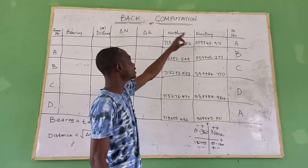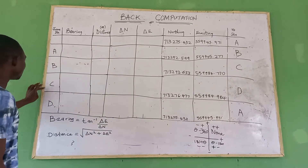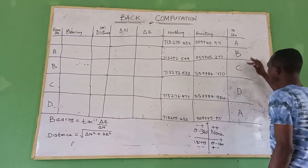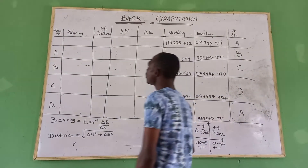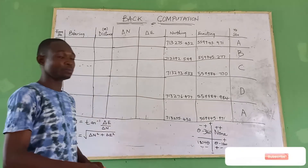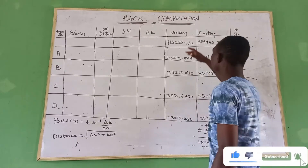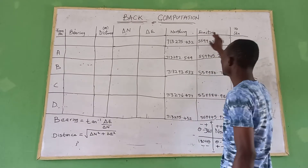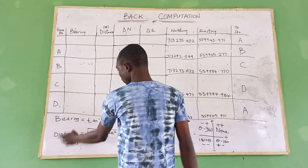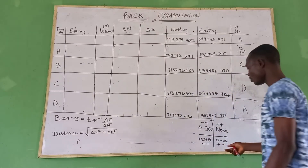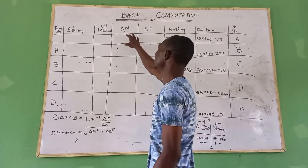We have northings and eastings for stations A, B, C, and D. Station ABCD back to A means it's going to be a closed traverse. In order to calculate your bearing and distance, we have our coordinates for northing and easting, and we have this formula for bearing and distance.